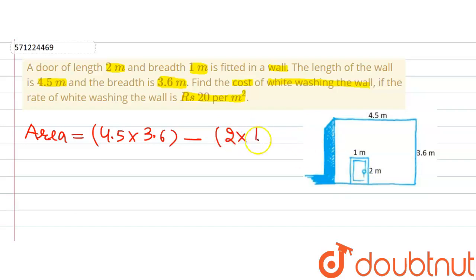The door is also in the form of a rectangle, so the length will be 2 meter and the width will be 1 meter. Now solving it, we will get area to be whitewashed is equal to 4.5 multiplied by 3.6, which gives us 16.2, minus 2 multiplied by 1, which gives us 2. This will be equal to 14.2 meter square, so this is the area which will be whitewashed.